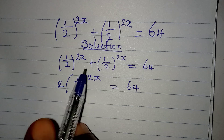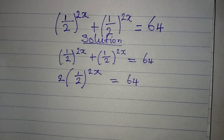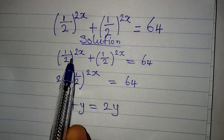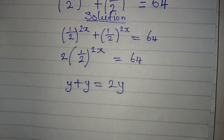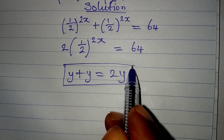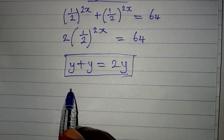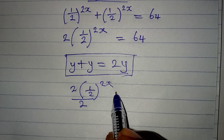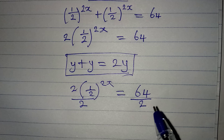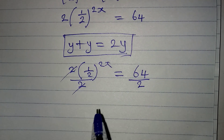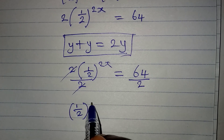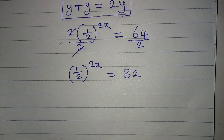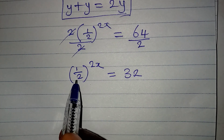It's going to be 2 multiplied by 1 over 2 to the power of 2x. Remember, if you have y plus y, that is the same thing as 2y — that's what happened here. Now we divide both sides by 2: the 2 on the left cancels, and on the right we have 64 divided by 2, which gives us 32. So we have 1 over 2 to the power of 2x equals 32.